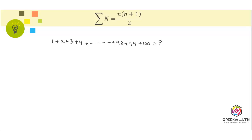So what he did was write the numbers backwards. Let's start from 100, 99, 98, 97, and then go all the way till 1. Since this is the same summation, the result would be the same P.